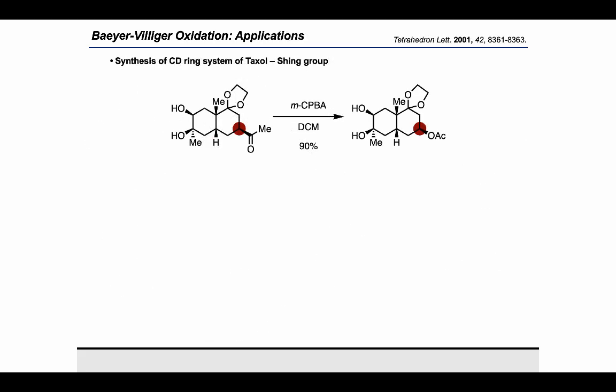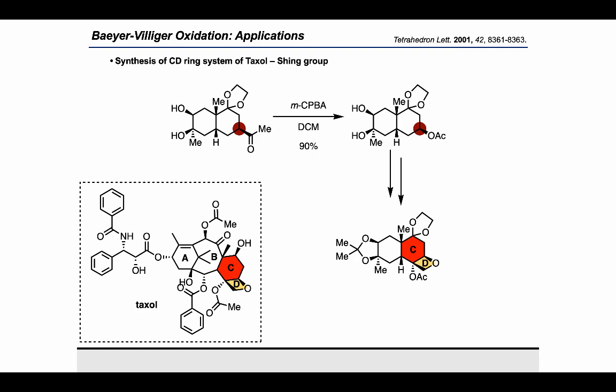Now let's switch over to applications in total synthesis. Borrowing an example from the Kürti-Czakó named reaction book, we can see how the Shing group used MCPBA to carry out a Bayer-Villiger that converted a methyl ketone into an acetoxy group. This occurred with retention of stereochemistry at the migrating center, marked in red, as mentioned earlier. The oxygen installed during this transformation ended up appearing in the oxetane of the target structure, which contained the CD-ring system of Taxol.